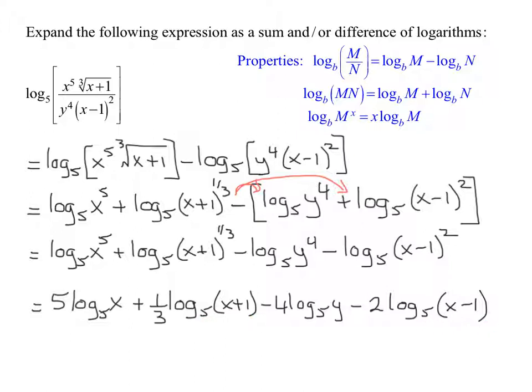The other common mistake students make is when I'm breaking up the log to the base 5 of a quantity, when you look at all your individual logs, make sure you have your base 5 written on each of them. Because if you forget to write one of these 5s, you turn a log to the base 5 into a log to the base 10. Because remember, if there's no base written, it's base 10. So make sure all your logs have the correct base in the answer.